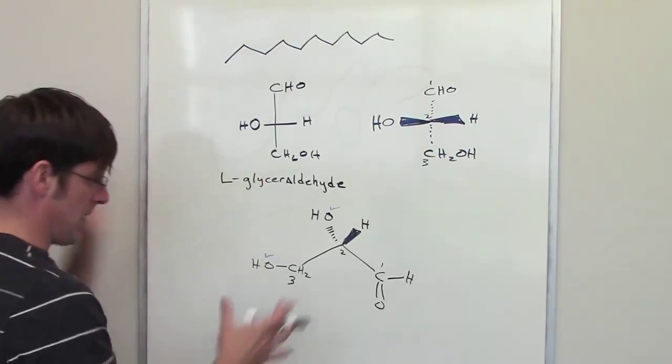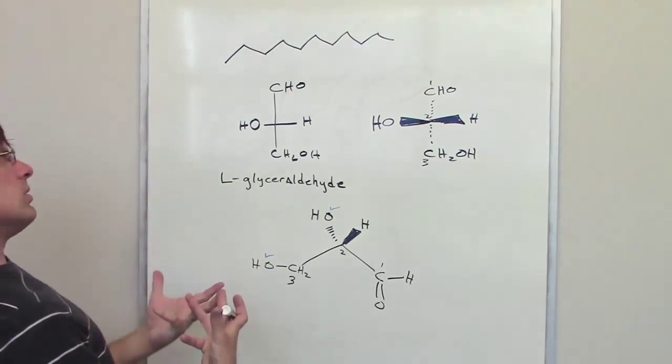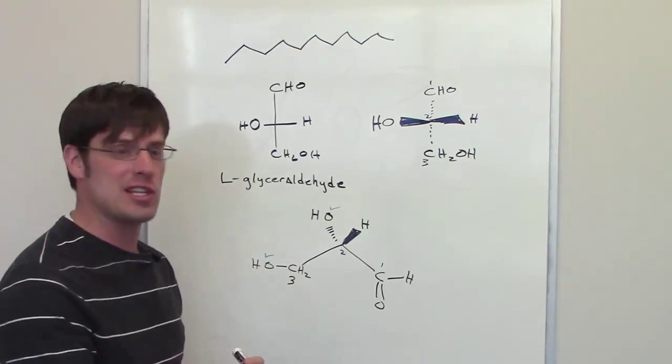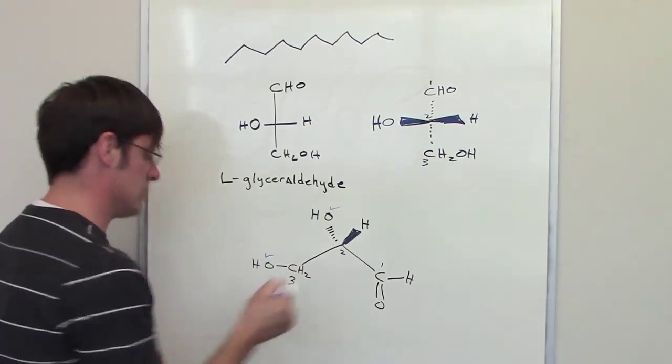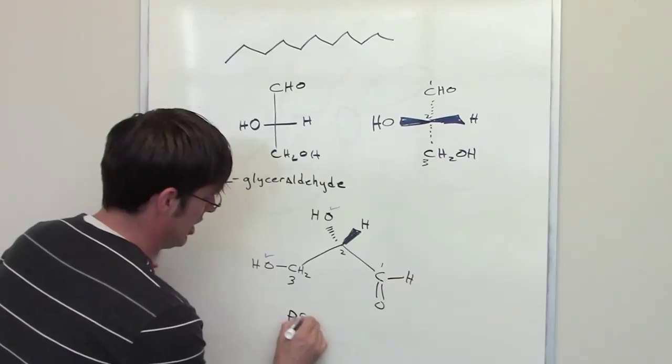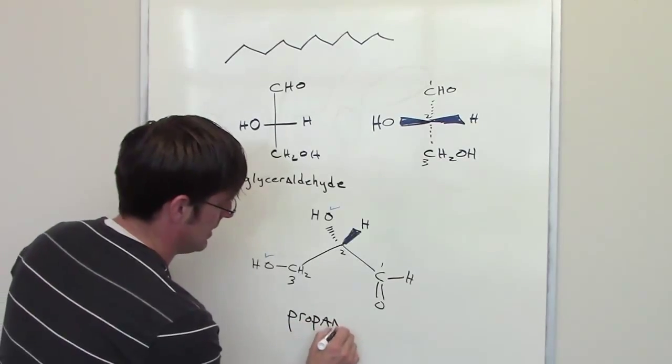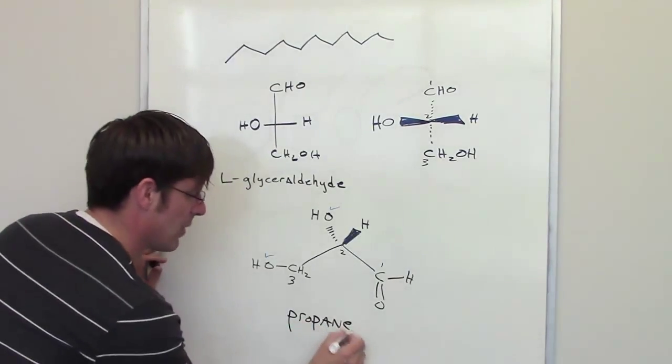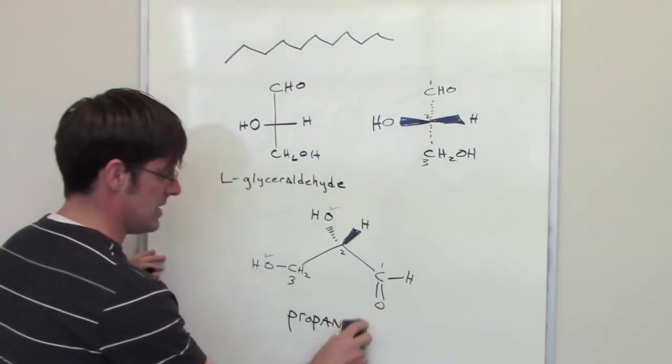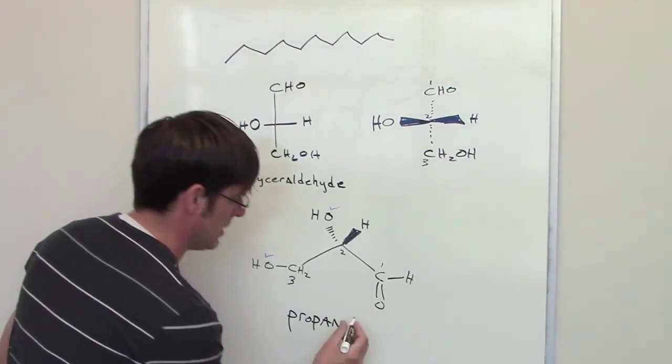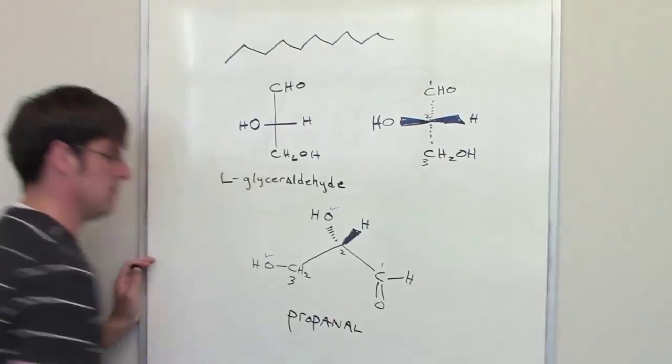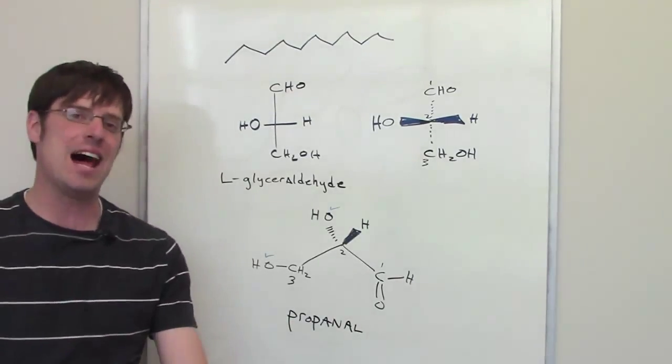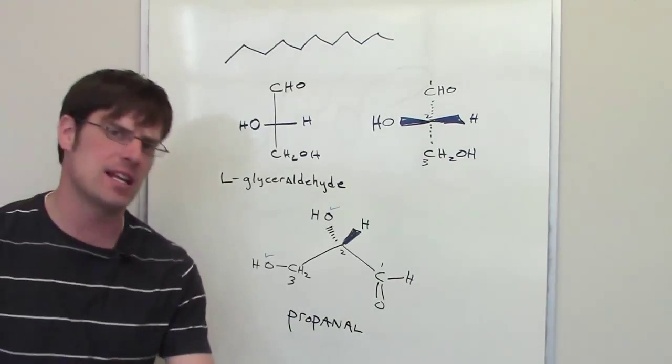I've got my aldehyde. How do I name an aldehyde? I count the total number of carbons in the carbon chain. I've got three carbons, and normally a three-carbon long chain is propane. When I'm talking about an aldehyde, however, I erase the E and replace the E with AL. So that is pronounced propanal, or propanal if you're emphasizing the wrong syllable.